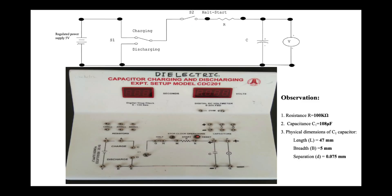We are going to use a 5 volt DC power supply. R is the resistor, C is the capacitor, and V is the voltage. In this circuit diagram, X and Y represent the 5 volt DC regulated power supply. We need to connect X to A and Y to B. After the connection, here we have the digital stop clock and the digital DC voltmeter.